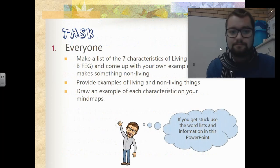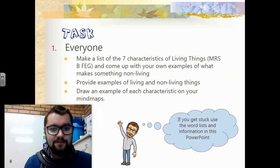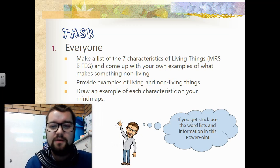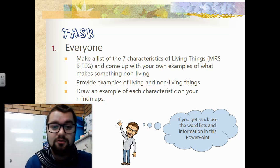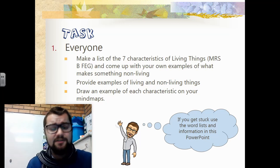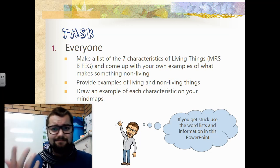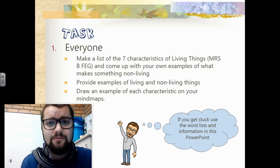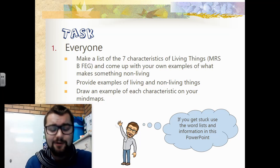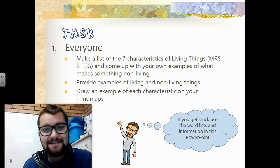For the task, what I need you to do is make a list of the seven characteristics of living things using Mrs. B Fig, and come up with your own examples of what makes something living and non-living. Provide examples of living and non-living things, and draw an example of each characteristic on your mind map. Create a mind map of what would make something living and non-living. Be sure to include examples, use lots of color, and be expressive — make it exciting! When we are done at the end of this lockdown, bring it to class so we can put it up in our classrooms. I hope you really enjoy this task. Please feel free to email your teacher if you have any questions.